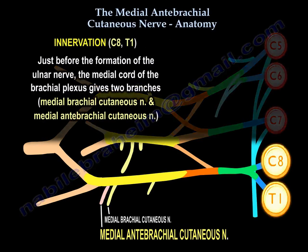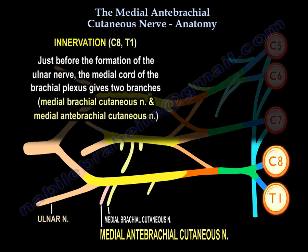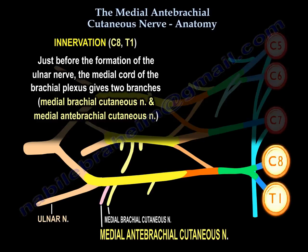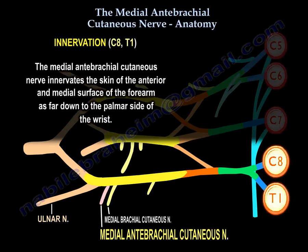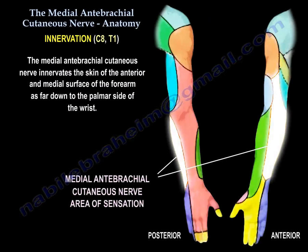Innervation: C8-T1. Just before the formation of the ulnar nerve, the medial cord of the brachial plexus gives two branches: the Medial Brachial Cutaneous Nerve and the Medial Antibrachial Cutaneous Nerve. The Medial Antibrachial Cutaneous Nerve innervates the skin of the anterior and medial surface of the forearm as far down as the palmar side of the wrist.